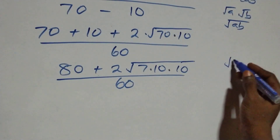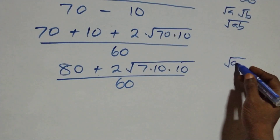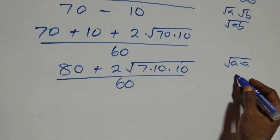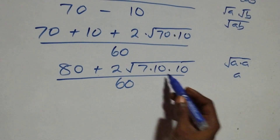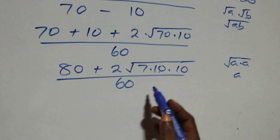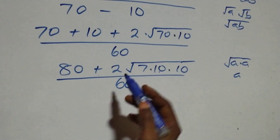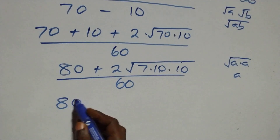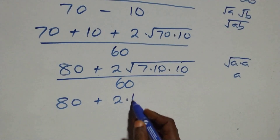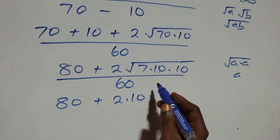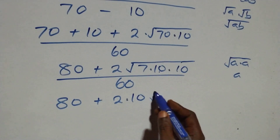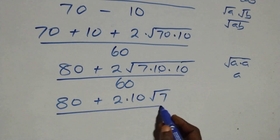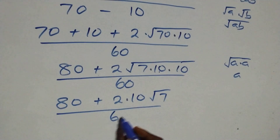Since root ten times ten equals ten, we take ten out and we have 80 plus two times ten, leaving root seven, all over sixty.